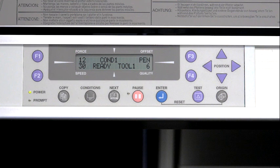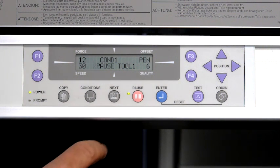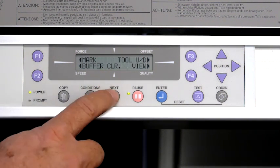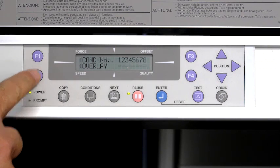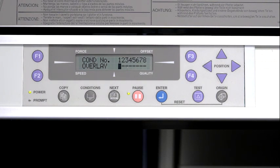To enable overlay, press pause, press next twice, press F2 for tool condition, press F1 for thick, and then F2 for overlay. In this example, let's enable overlay for condition 4.